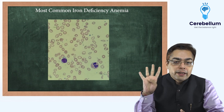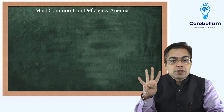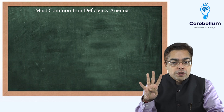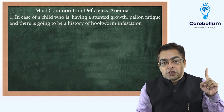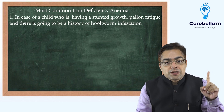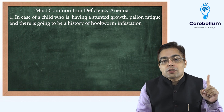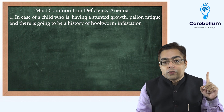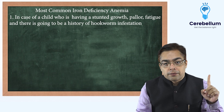So what are the four major pointers that you have to keep in mind for iron deficiency anemia diagnosis? Number one: in case of a child who is having stunted growth, pallor, fatigue, and there is going to be a history of hookworm infestation.